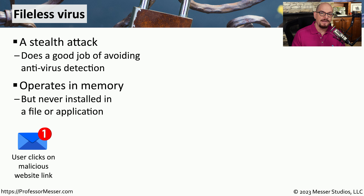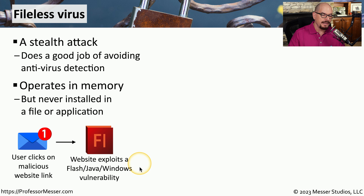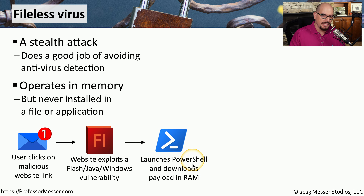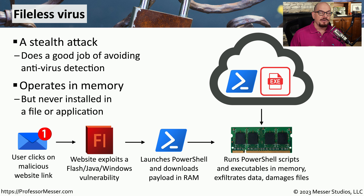Here's a very common example of how a file-less virus is able to first infect your system, and then from that point, install additional malicious software. This usually starts with the end user clicking on a malicious link inside of an email or part of an existing website. That link will take the user to a website set up to exploit a vulnerability within your operating system or the applications running on it. Exploits associated with Flash, Java, or a known Windows vulnerability would be a perfect way for this file-less virus to get into your operating system. Now that the virus is running, it can run other applications like PowerShell, which then downloads additional PowerShell scripts and runs those scripts in memory as well. At this point, the virus can run additional PowerShell scripts, install other applications, start removing data from your system, and even transferring that data to a third party.